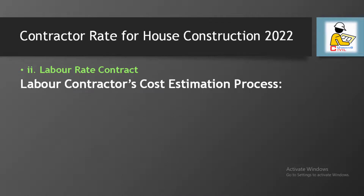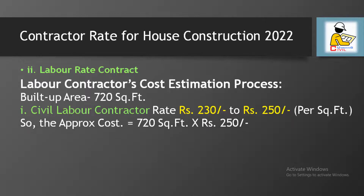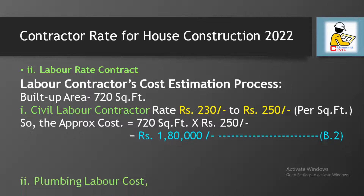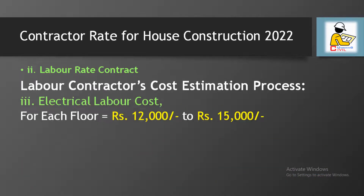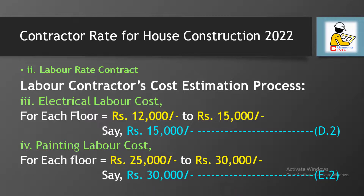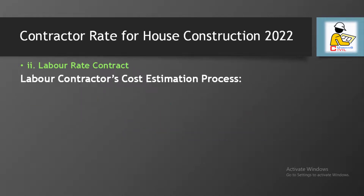For 720 square feet built-up area, the civil labor contractor will charge as per market rate between rupees 230 to rupees 250 per square feet, so approximate cost is around rupees 1 lakh 80,000. For plumbing labor with two bathrooms and WC, the range is rupees 15,000 to rupees 20,000, taken as rupees 16,000. For electrical labor, the rate lies between rupees 12,000 to rupees 15,000. For painting labor it is rupees 25,000 to rupees 30,000, and for carpenter's charge it is rupees 30,000 to rupees 35,000. Adding all these together, the total labor contractor cost comes to rupees 2,74,600.